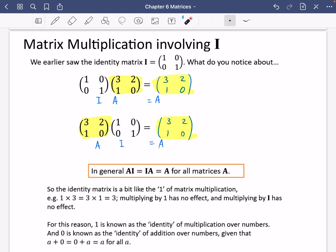So what I've written here is that the identity matrix therefore is a bit like the 1 of matrix multiplication because if you do 1 times 3 or 3 times 1 you get 3. In other words multiplying by 1 has no effect and multiplying by I also has no effect. Multiplying by the identity matrix has no effect at all.